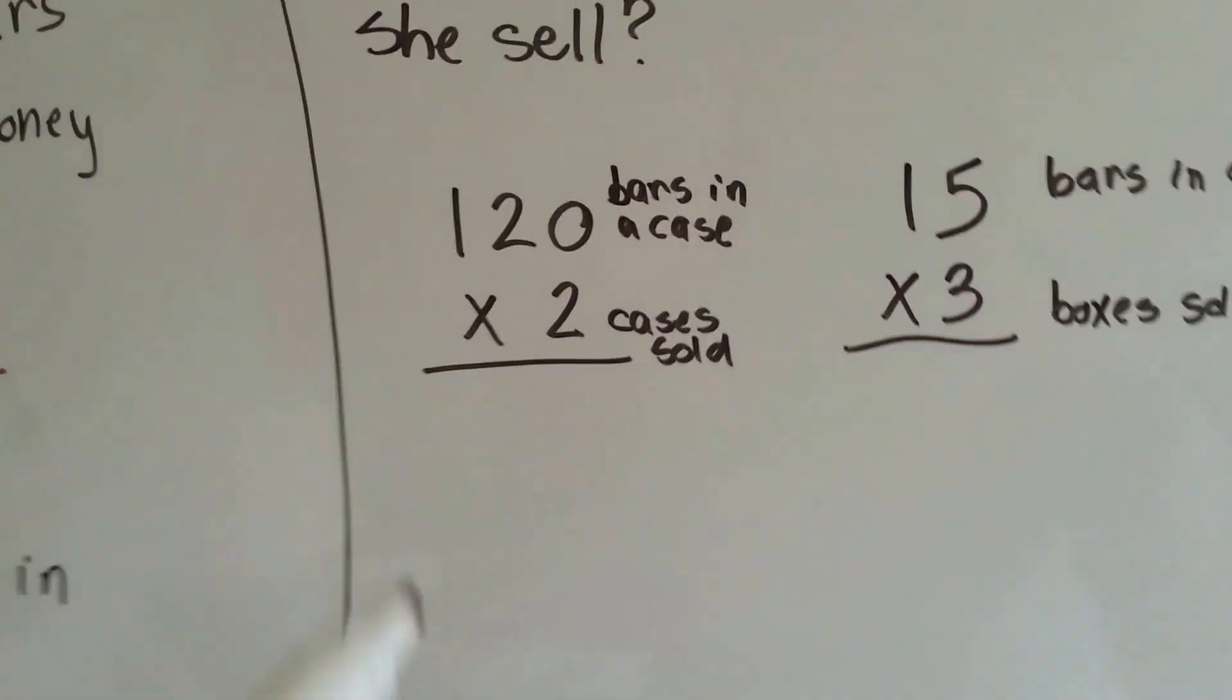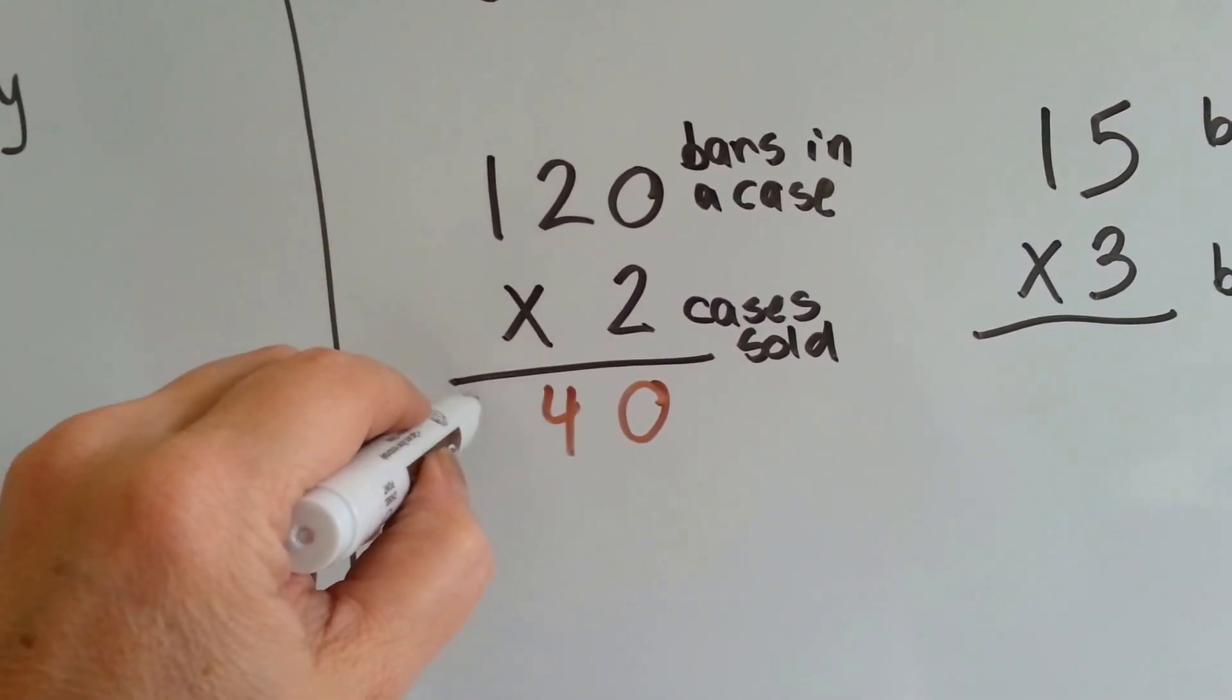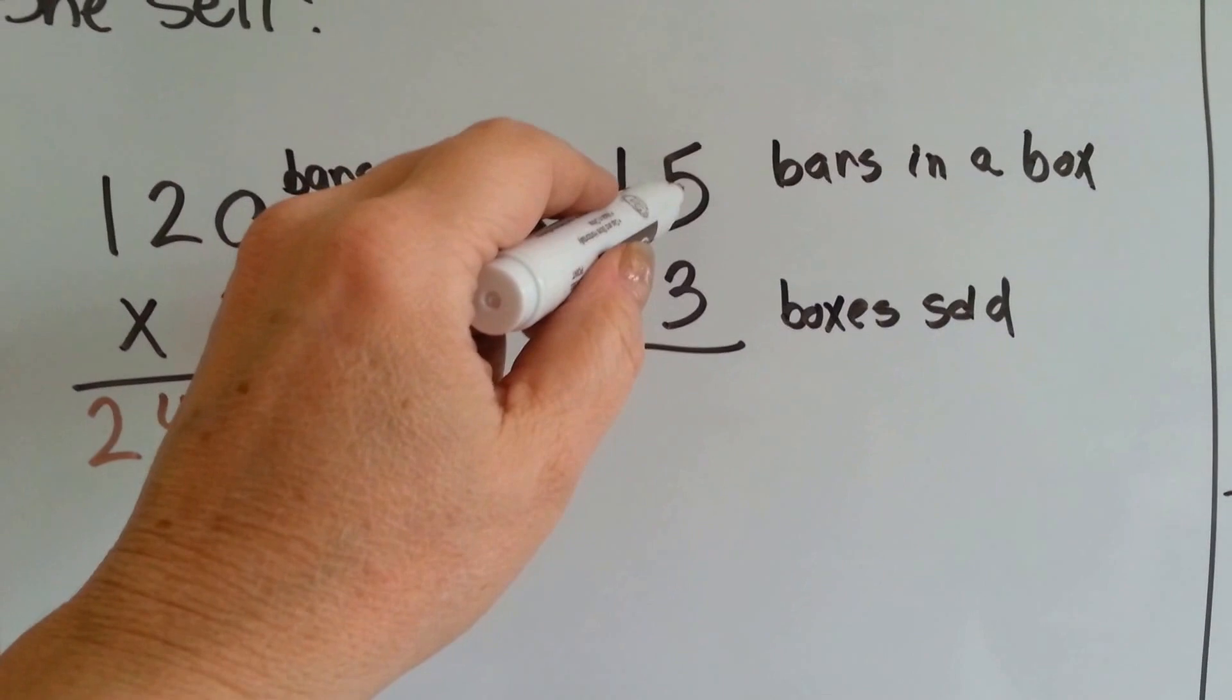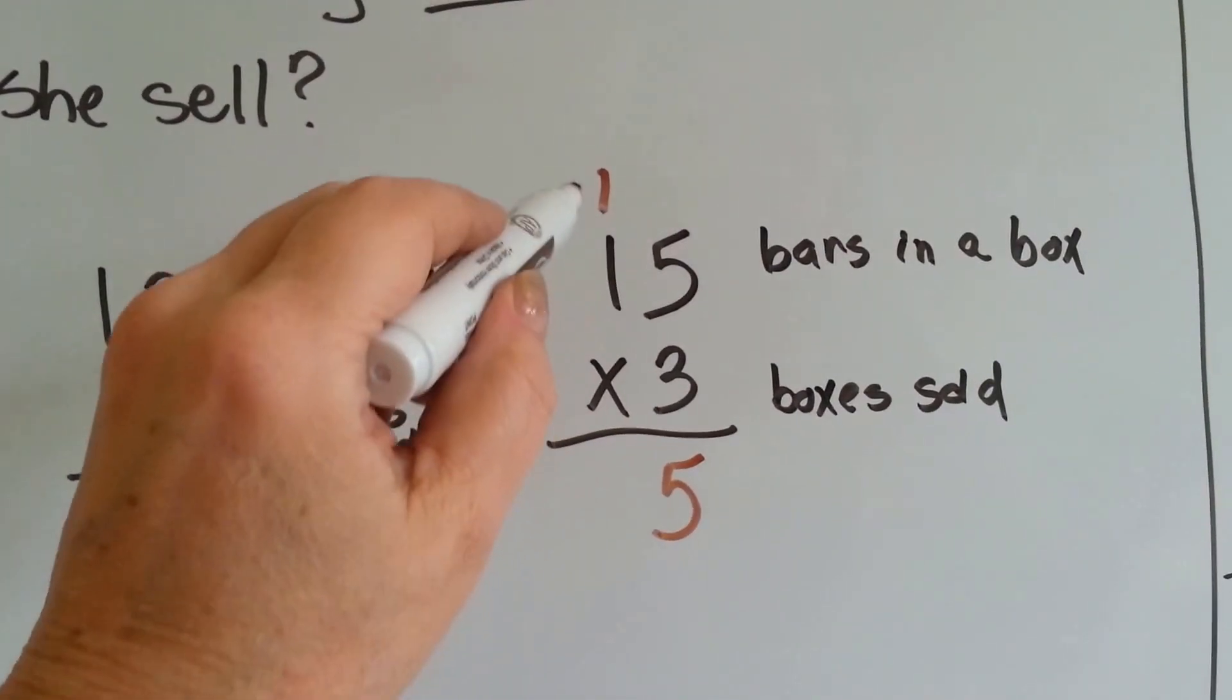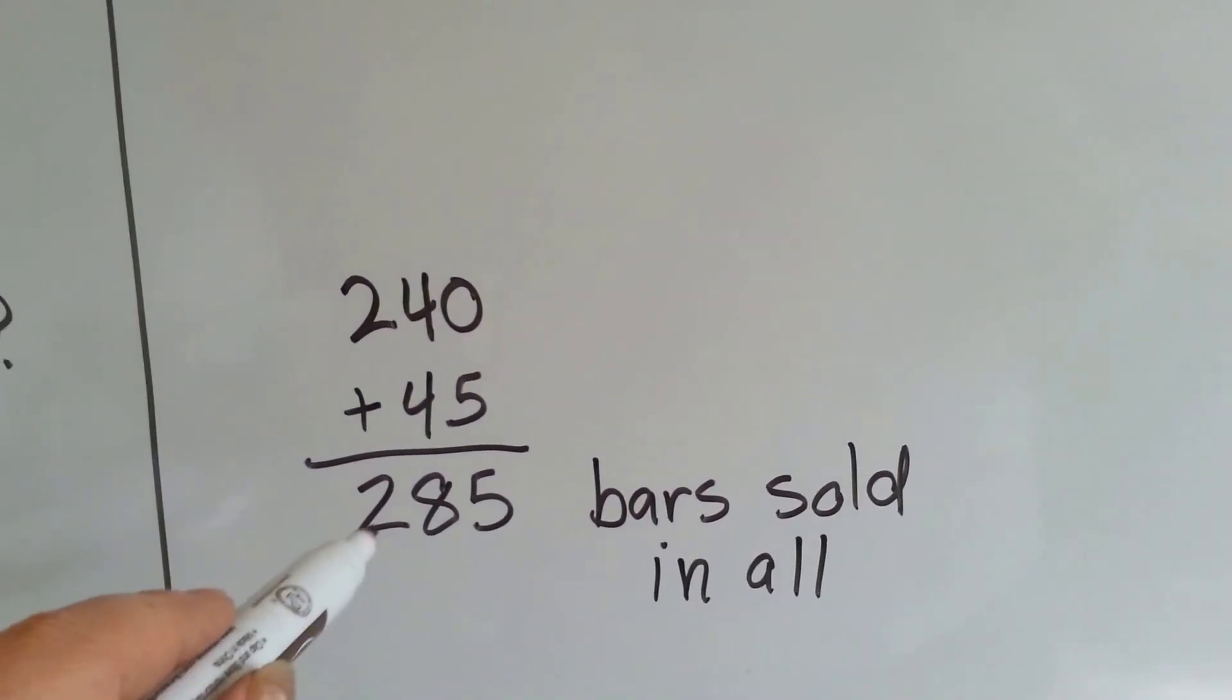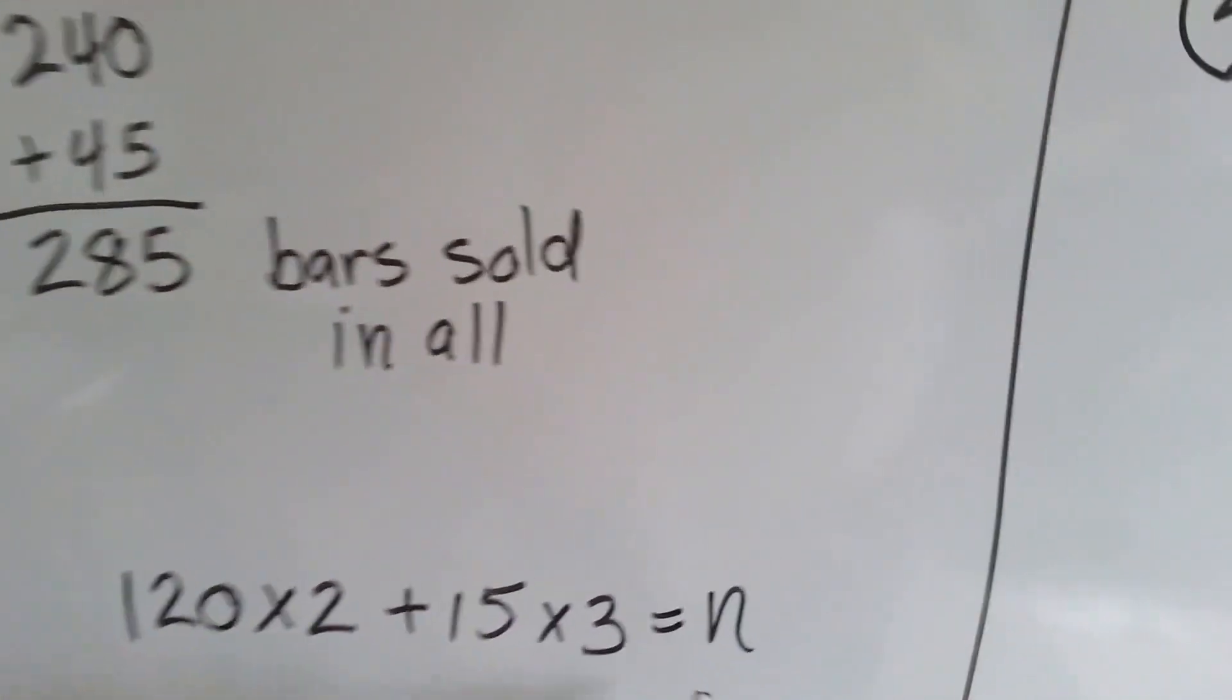So let's do the 120 times 2. 2 times 0 is 0, 2 times 2 is 4, and 2 times 1 is 2. So there's 240 candy bars. Now we need to do the 3 boxes she sold. 3 times 5 is 15, carry the 1 and put the 5 down. 3 times 1 is 3, plus 1 more is 4. So now we have 240 plus 45. 240 plus 45 is 285 bars sold in all. So n is equal to 285.